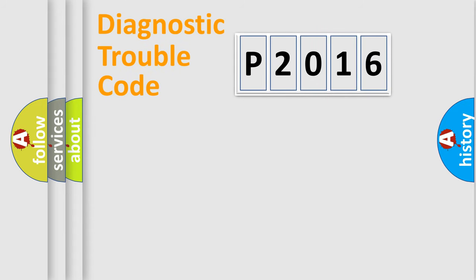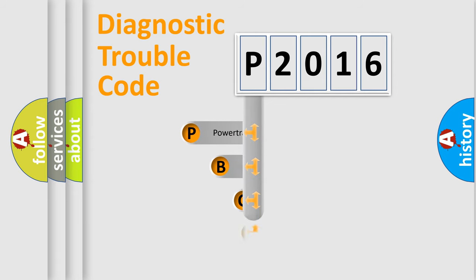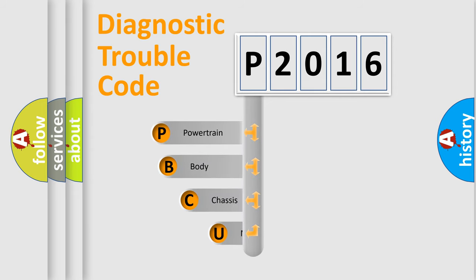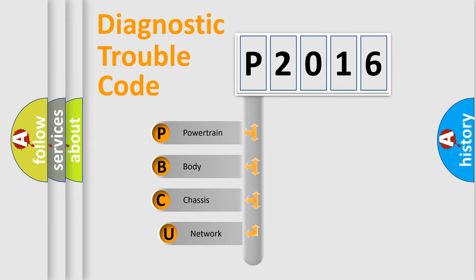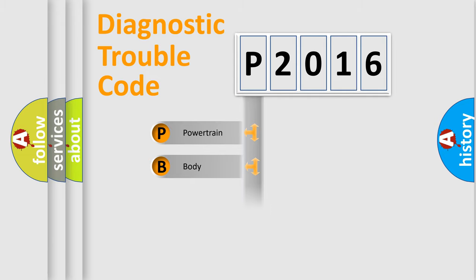Let's look at the history of diagnostic fault code composition according to the OBD2 protocol, which is unified for all automakers since 2000. We divide the electric system of automobile into four basic units: Powertrain, Body, Chassis, and Network.